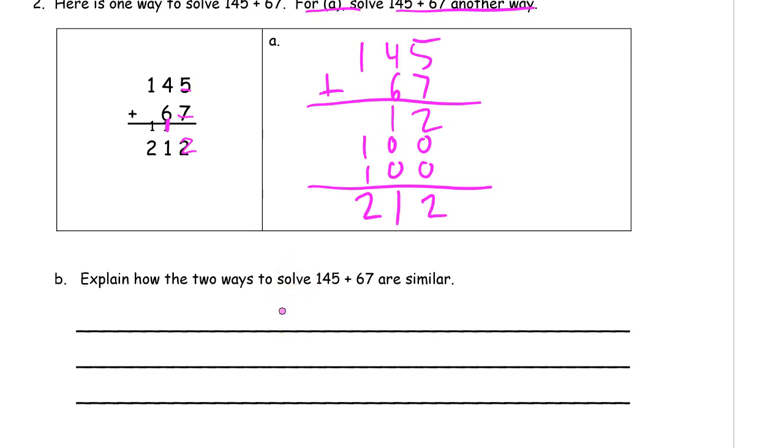How are these two different ways similar? Well, let's see. Right here, what are we doing in the tens place? In the ones digits, we're still adding 5 plus 7 to make 12.